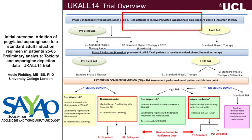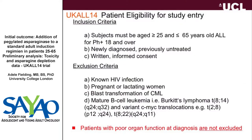All patients, whether T or B-lineage ALL, receive pegylated asparaginase in a non-randomized fashion, regardless of which randomized arm they're entered into. We've got very broad eligibility criteria because this is a national trial and we want as many patients as possible. We don't exclude anybody for poor performance status or poor organ function at diagnosis, because we feel the data should be as applicable as possible to the real world.